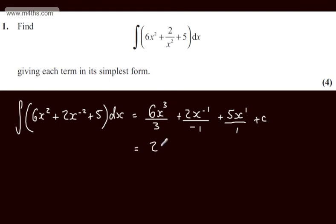If we tidy this up, 6 over 3 will give me 2, so we'll have 2x cubed, then we'll have minus 2x to the minus 1 plus 5x plus a constant of integration.